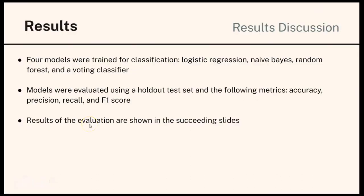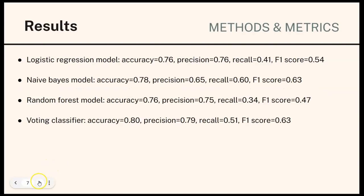Hello everyone, my name is Alan Salamontam, and for this part of the video, I'm going to discuss the results and conclusions for our project. Going with the results, remember that we used four models to train for classification: Logistic Regression, Naive Bayes, Random Forest, and a Voting Classifier. The models were evaluated using a holdout test set and the following metrics: accuracy, precision, recall, and the F1 score. The results of those tests are shown in the succeeding slides.